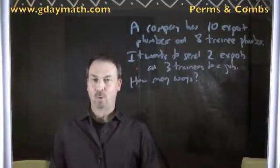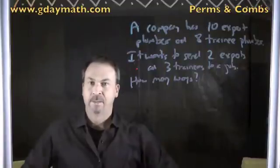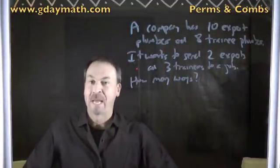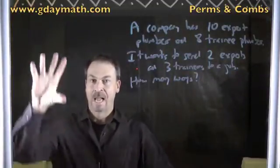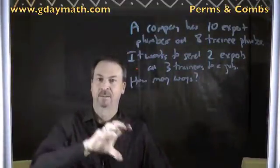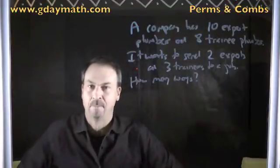Let's bring it all together. We start off this unit, lesson two, with the multiplication principle. How many ways to complete one task, second task, third task — multiply all the ways together.